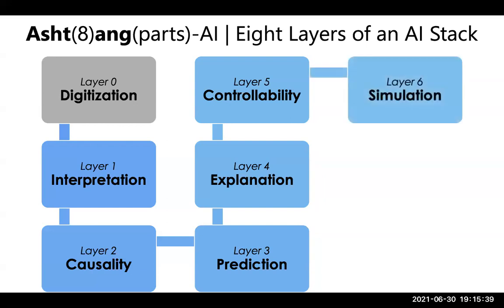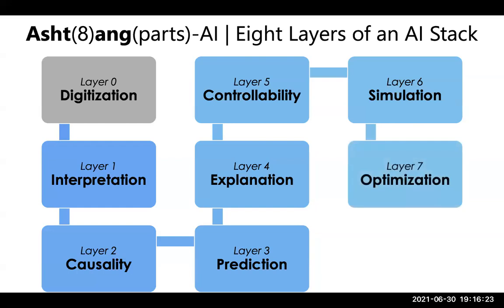Once you are able to control, you can simulate. Simulation is becoming more important as systems grow complex. For example, to simulate a policy for allocating people to cabs in Ola, you can't just try it once or twice — you must simulate it, try different policies, and see which one works best. Digital twin and simulation is a very big area, but you cannot simulate unless you know what is a control variable and what is a non-observed variable.